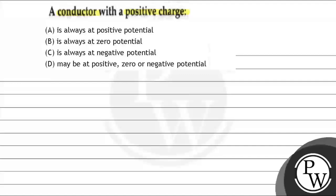For this question, we have a conductor with a positive charge. Let's assume that the positive charge is Q. We will determine whether the potential will always be positive, always be negative, or could be positive, negative, or zero. The key concept here is: